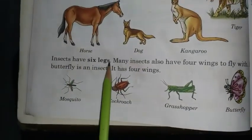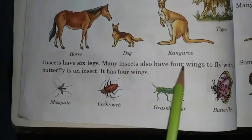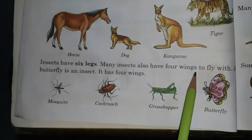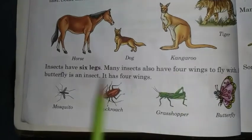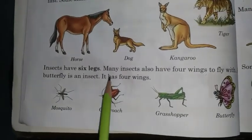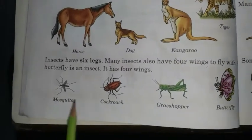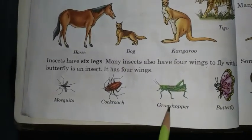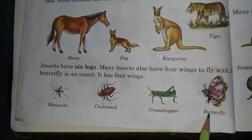Insects have six legs. Many insects also have four wings to fly with. A butterfly is an insect — it has four wings. Other insects include mosquitoes, cockroach, grasshopper and butterfly.